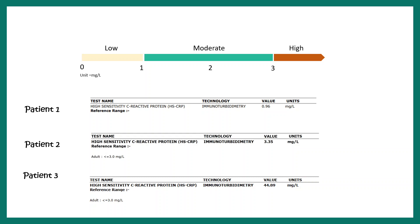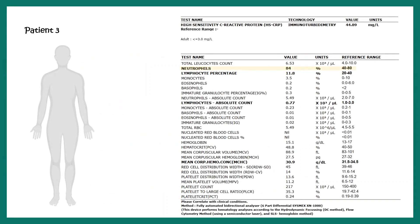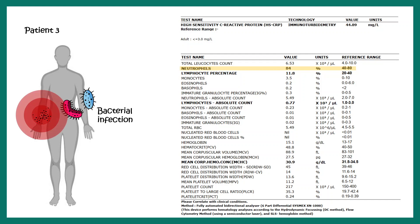For patient three, if the doctor performs a complete blood test, they may find that the neutrophil level has gone up. An elevated neutrophil level is a characteristic signature of a bacterial infection, meaning patient three was likely suffering from a bacterial infection causing the high inflammation. Alternatively, patient three could also be suffering from cardiac disease, but further tests are required to confirm that interpretation.